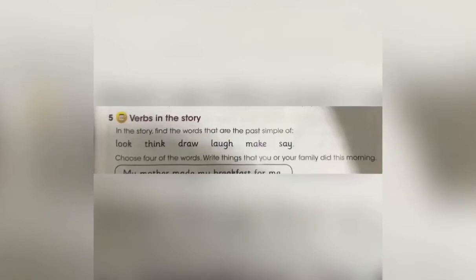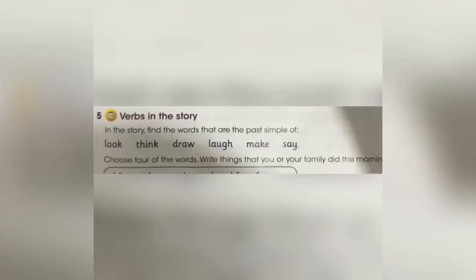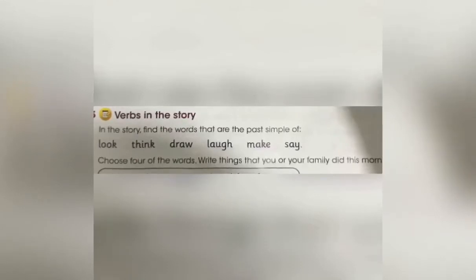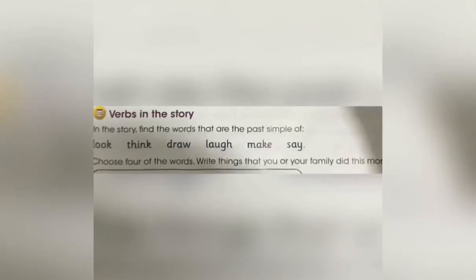Verbs in the story. In the story, find the words that are the past simple of: look, think, draw, laugh, make, say. Read the story once again and look for the past tense of each verb. The past tense of look is looked. Think — thought. Draw — drew. Laugh — laughed. Make — made. Say — said.